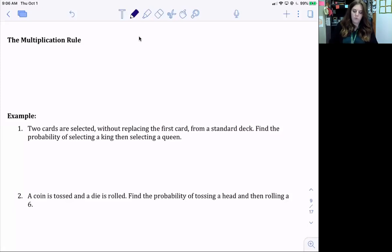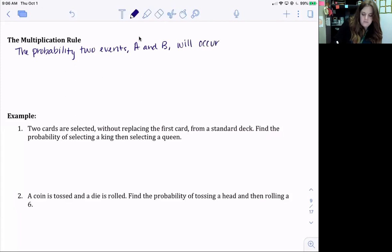Okay, so now we're going to look at the multiplication rule with probability. The multiplication rule says that the probability of two events, A and B, will occur in sequence is P(A and B) equals the probability of A times the probability of B given A.